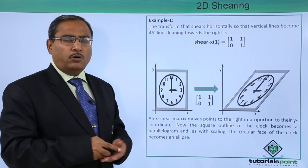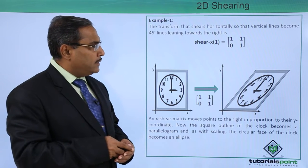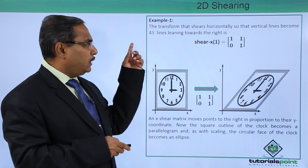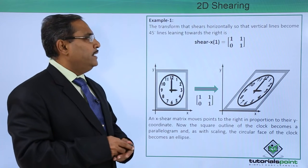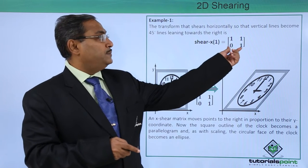Let us go for one example. The transform that shears horizontally so that the vertical lines become 45 degree lines leaning towards the right. Here we are having this respective matrix.